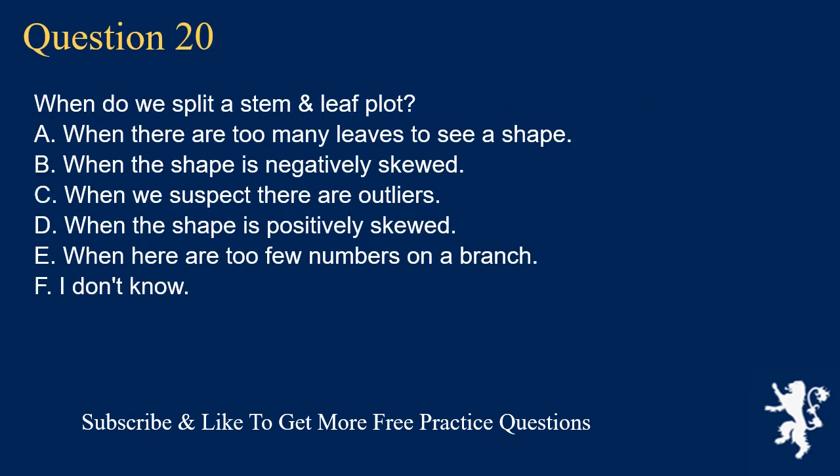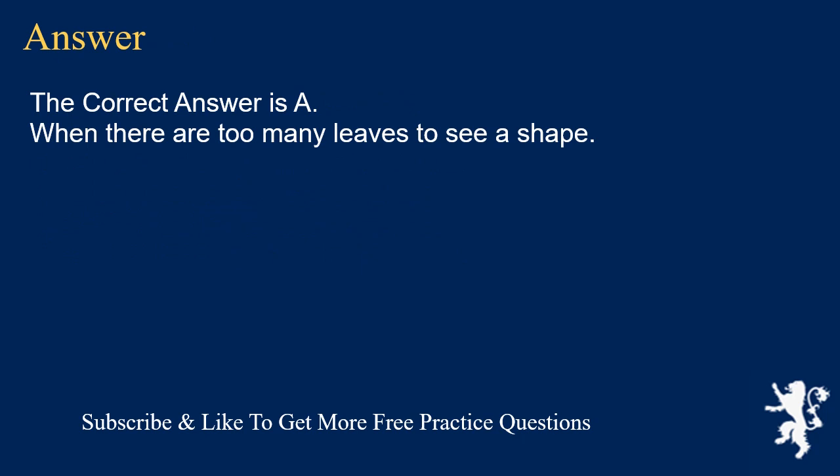Question 20: When do we split a stem and leaf plot? A. When there are too many leaves to see a shape, B. When the shape is negatively skewed, C. When we suspect there are outliers, D. When the shape is positively skewed, E. When there are too few numbers on a branch, F. I don't know. The correct answer is A, when there are too many leaves to see a shape.